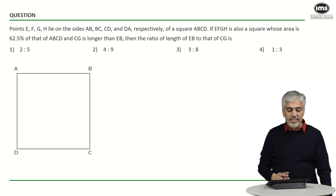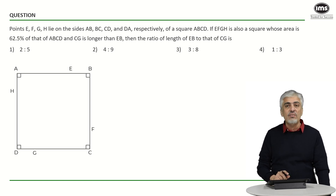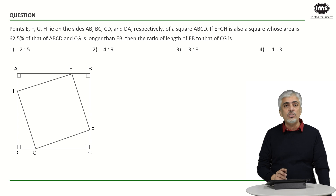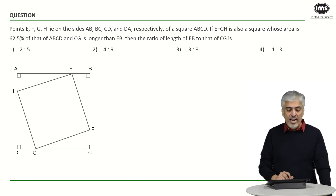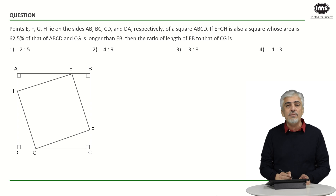So we have a square ABCD and on each of these sides we have E, F, G, H. That is a square — all angles are 90 degrees. E, F, G, H are somewhere on the sides and, importantly, EFGH is also a square. One important thing told to us is that the area of square EFGH is 62.5 percent of that of ABCD. CG is longer than BE, as I have noted in the diagram.